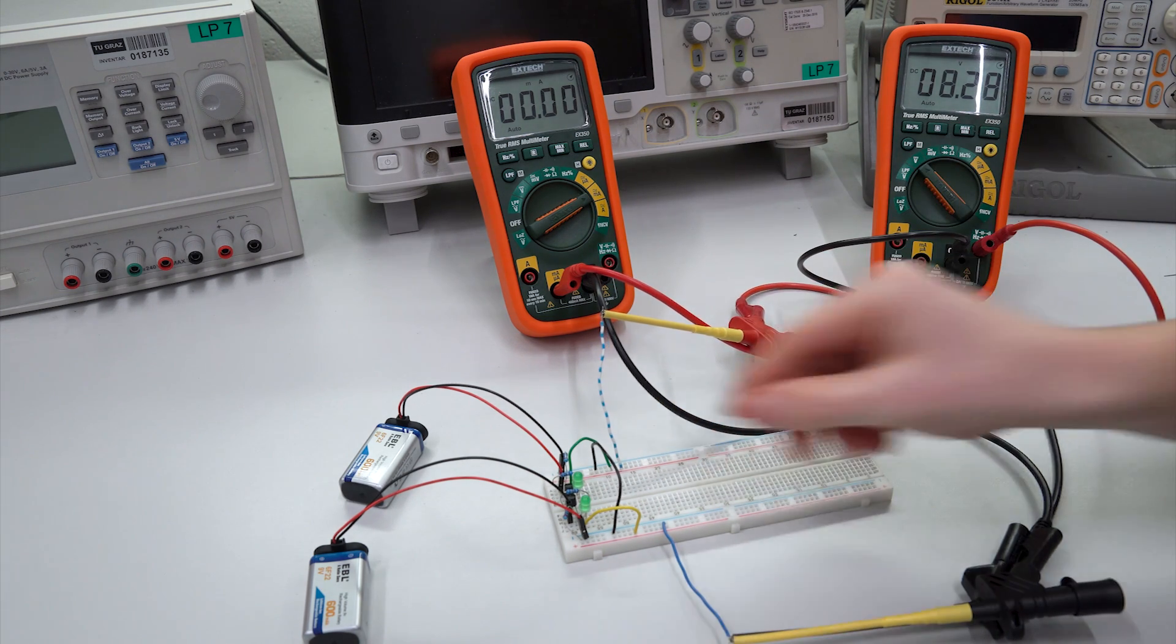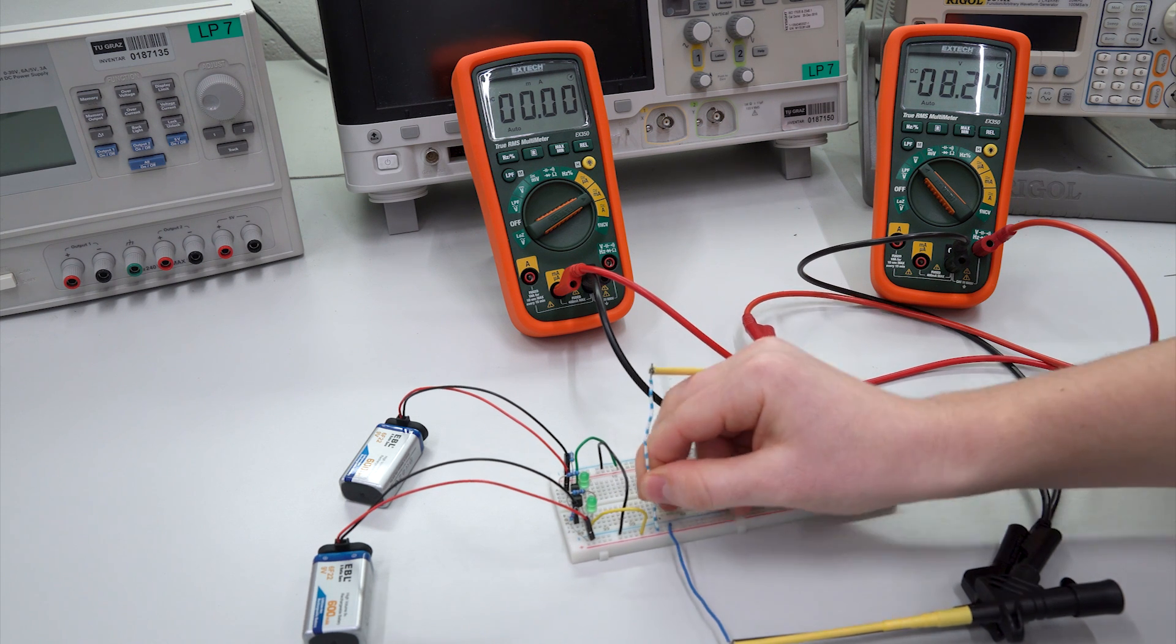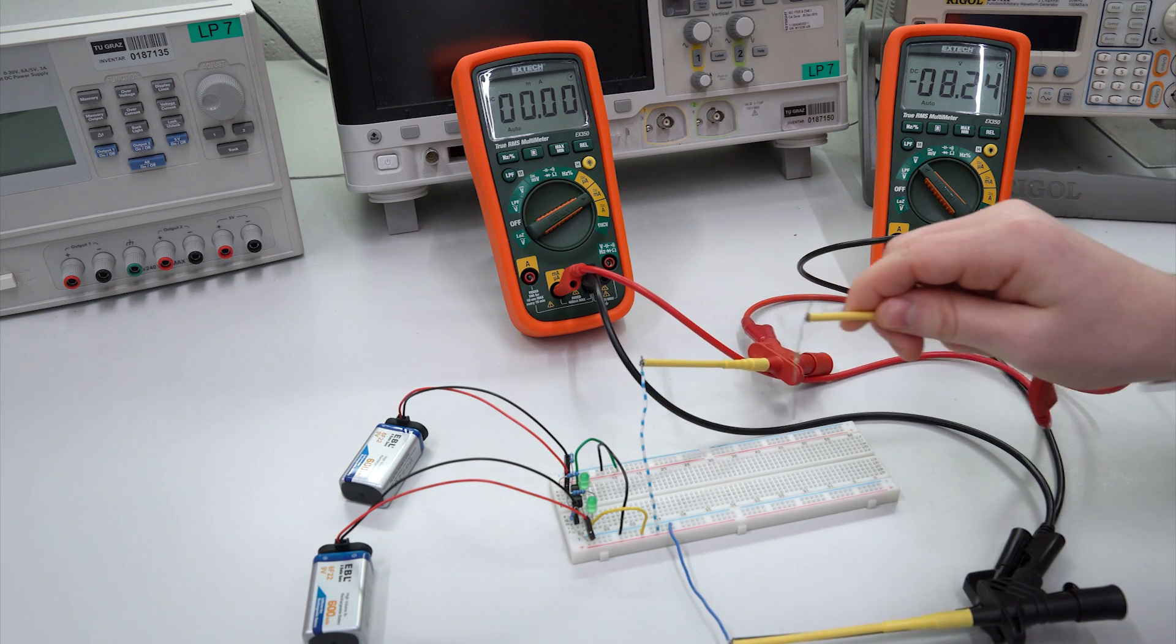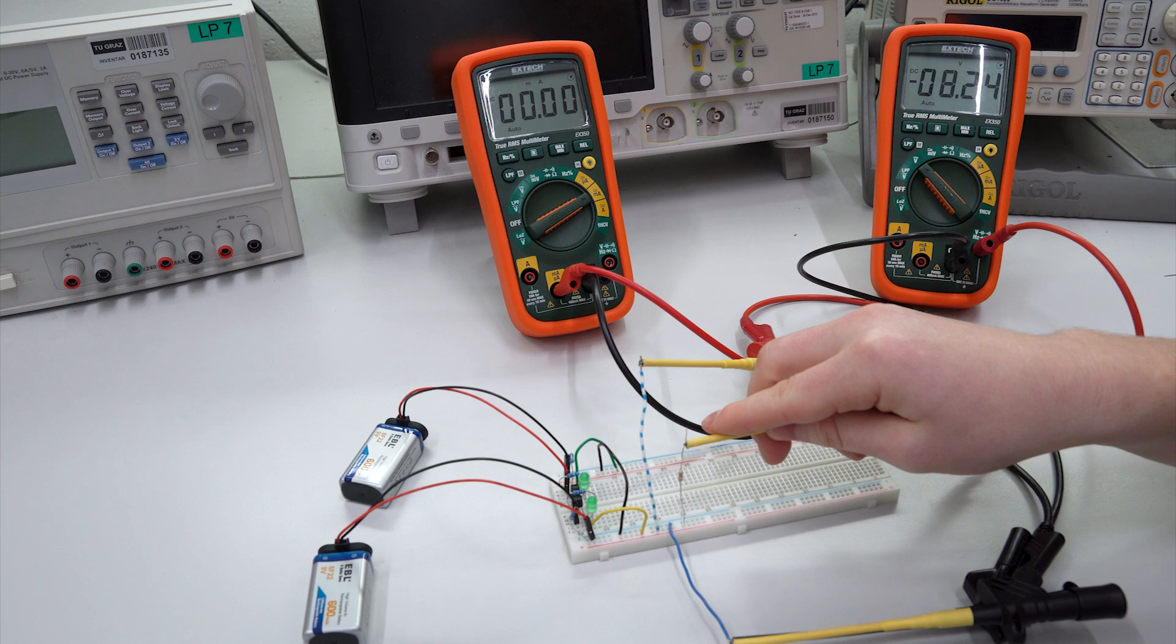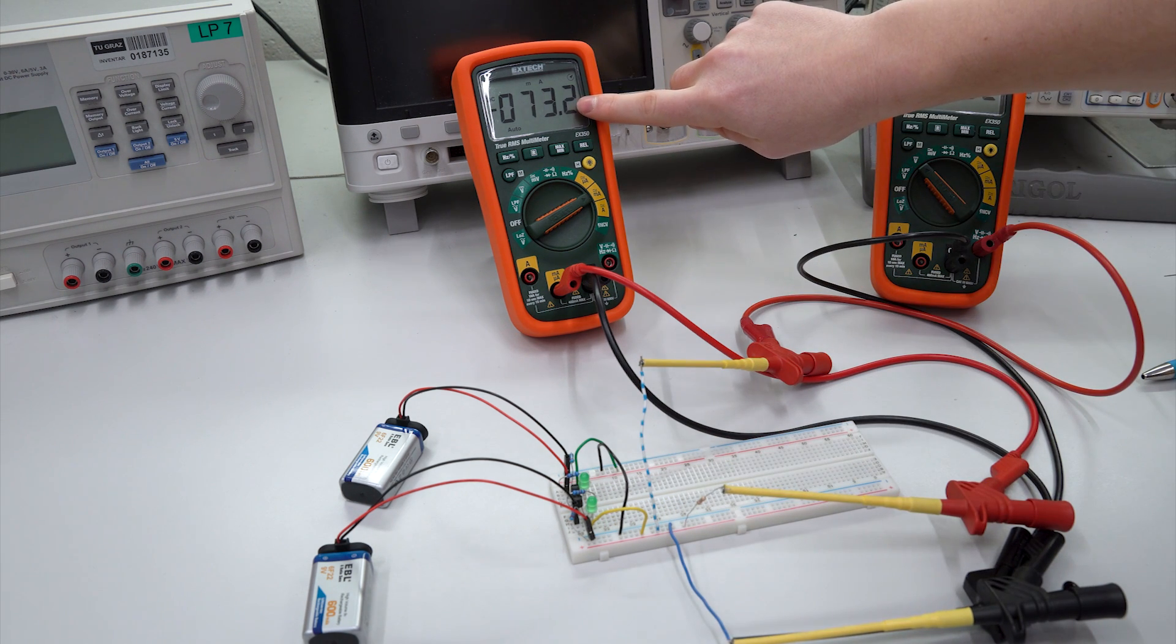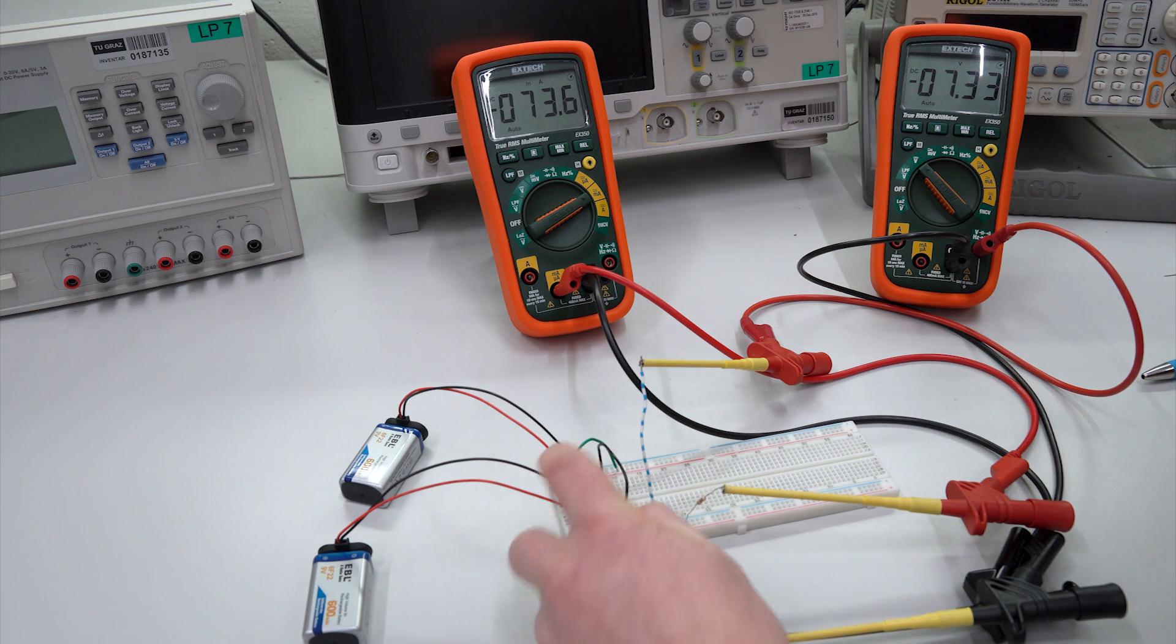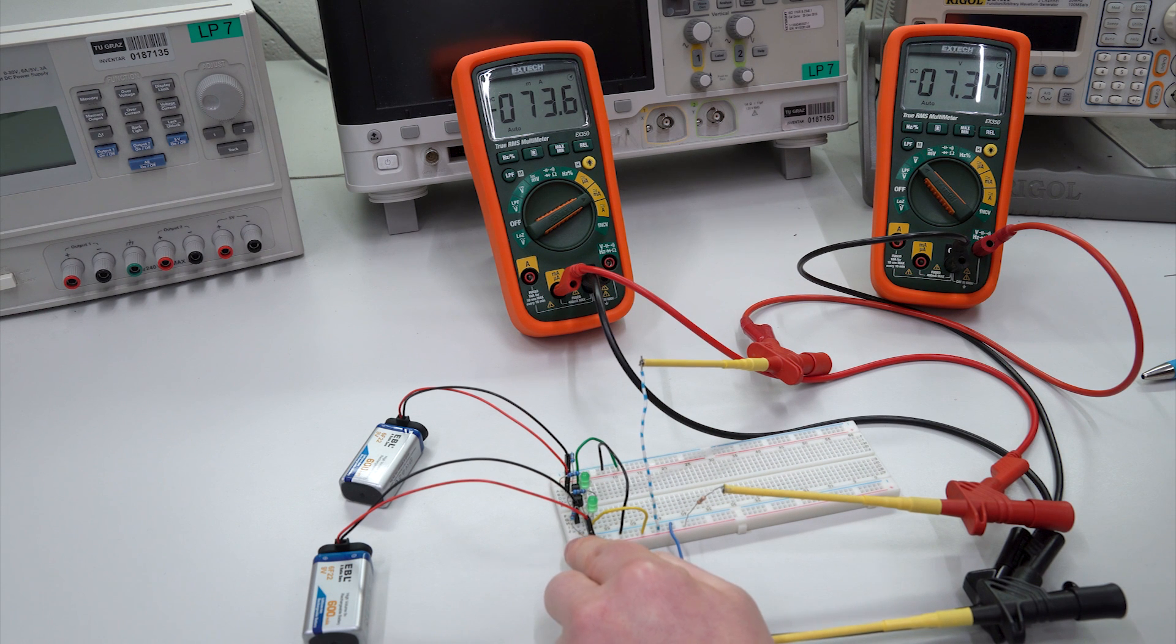Let's now do the same for the negative potential. So we load the negative potential. Here we can see we load it with around 73 milliamps. And the voltage dropped a little more. This depends on the transistor type and then the base resistor you use.